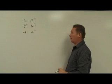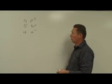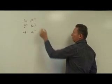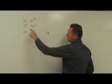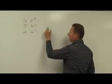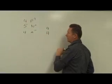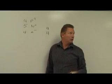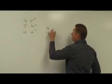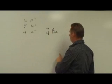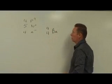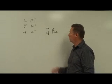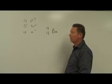Using that same logic, can I write a nuclide symbol for an atom with four protons, five neutrons, and four electrons? Four protons go in the lower left — the sum of four plus five is nine for the mass number. Element number four on the periodic table is beryllium. And since it has four electrons and four protons, there's no charge. I've identified the specific isotope of beryllium — beryllium-9.